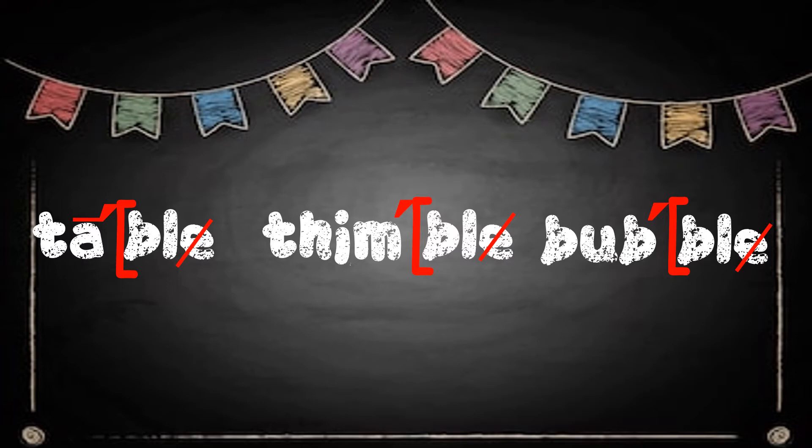Let's look at the word 'thimble.' What do we need to code first? We see digraph TH, so let's underline it. And remember, here in the word 'thimble,' digraph TH is making its unvoiced sound, so we're going to leave it alone. What other coding do we need to do? We have a vowel that's followed by a consonant, so we're going to code it with a breve. Let's look at our last word, 'bubble.'